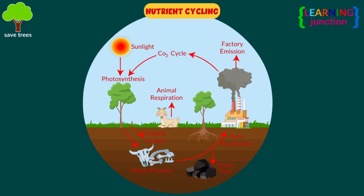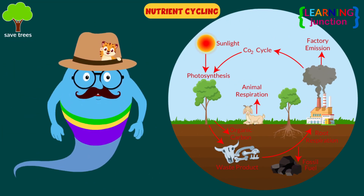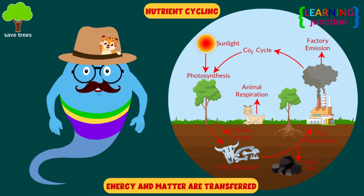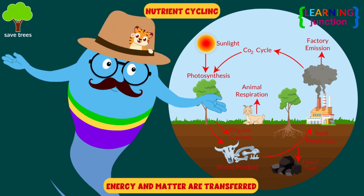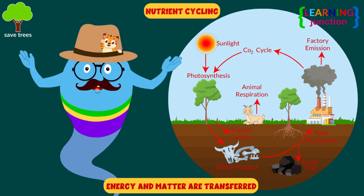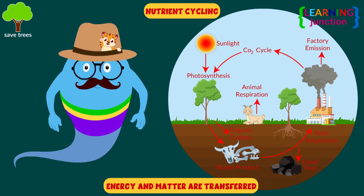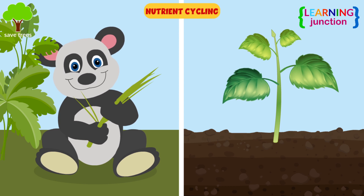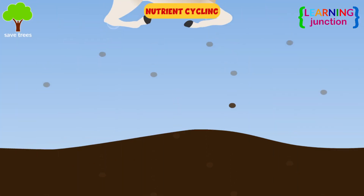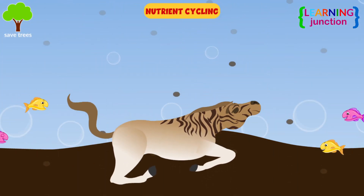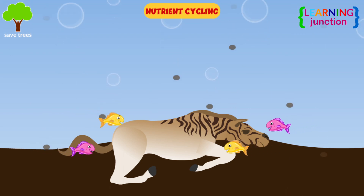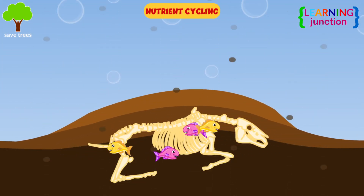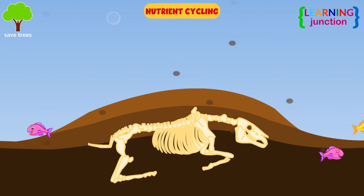Nutrient cycling. Look here! The nutrient cycle is a system where energy and matter are transferred between living organisms and non-living parts of the environment. This occurs as animals and plants consume nutrients found in the soil, and these nutrients are then released back into the environment via death and decomposition. Without the animals, this cycle will be affected.